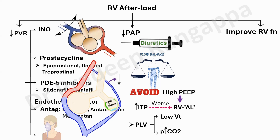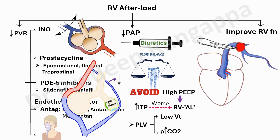Most importantly, if someone has a pulmonary embolism, that needs to be treated — either with thrombectomy, thrombolysis, or anticoagulation. Treating the underlying cause is also an important aspect in reducing RV afterload. These are the three major divisions to look at.